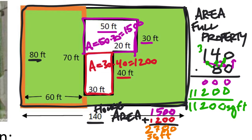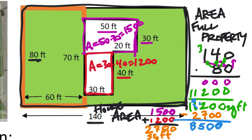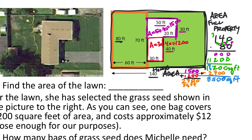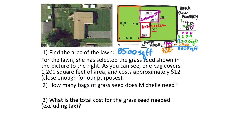Remember, the house area has to come off of the property area. We just found the property area: 11,200 square feet. I need to subtract the house — 2,700 — which will then tell me the square footage of the yard. So: 0 minus 0 is 0, 0 minus 0 is 0, 2 minus 7 — I need to borrow — 12 minus 7 is 5, 10 minus 2 is 8. That's 8,500 square feet of yard. So that solves the first one for us — find the area of the yard.